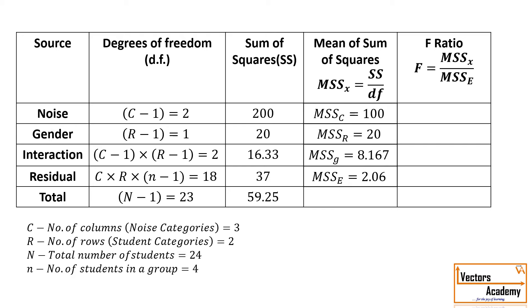Now the F-ratio. The F-ratio for all the mean sum of squares is calculated by the respective means divided by the mean sum of squares of the residual or error. So, 100 divided by 2.06 gives you 48.73; 20 divided by 2.06 gives 9.81; and 8.167 divided by 2.06 gives you 3.97.